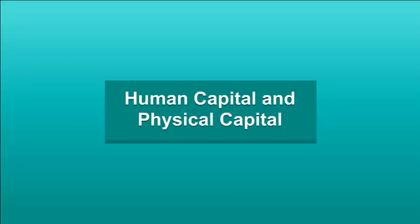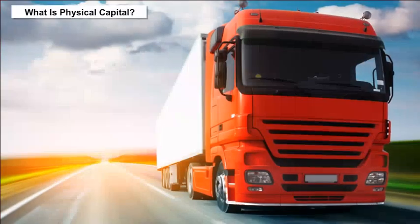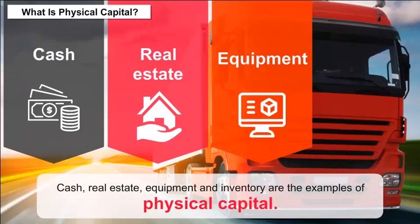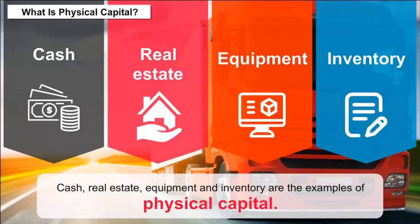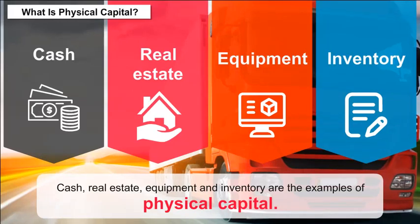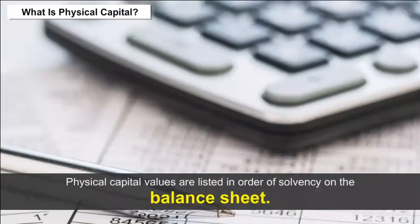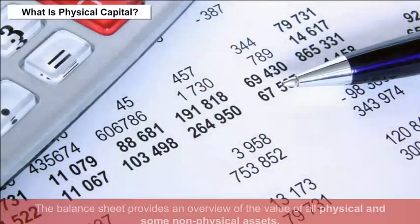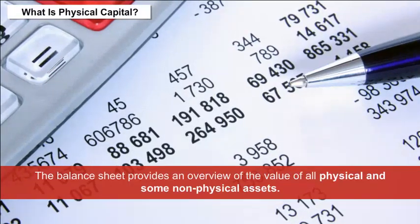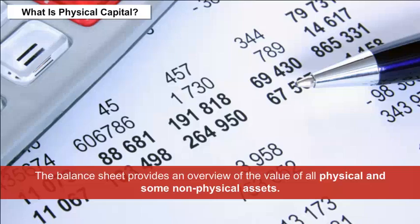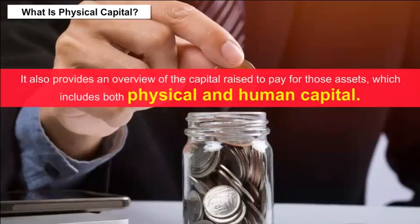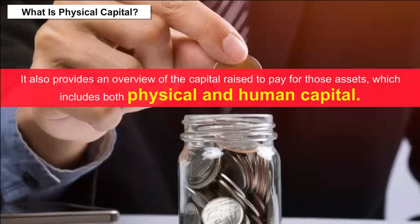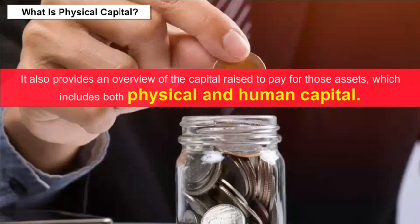Human Capital and Physical Capital: What is Physical Capital? Cash, real estate, equipment and inventory are examples of physical capital. Physical capital values are listed in order of solvency on the balance sheet. The balance sheet provides an overview of the value of all physical and some non-physical assets, as well as the capital raised to pay for those assets, which includes both physical and human capital.